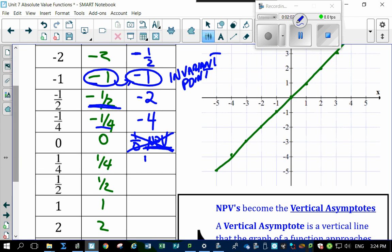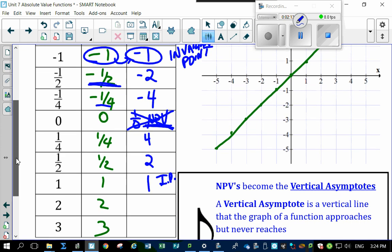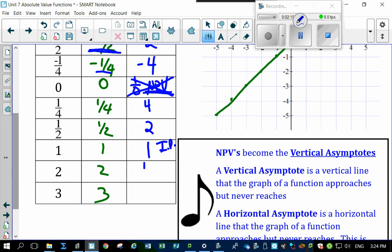Reciprocal of a quarter is 4. Reciprocal of a half is 2. Reciprocal of 1 is 1. Oh, there you go. You got another invariant point. Isn't that interesting? Let's keep on going. Okay. Reciprocal of 2 is a half. Reciprocal of 3 is a third. Okay. So let's start plotting these things.